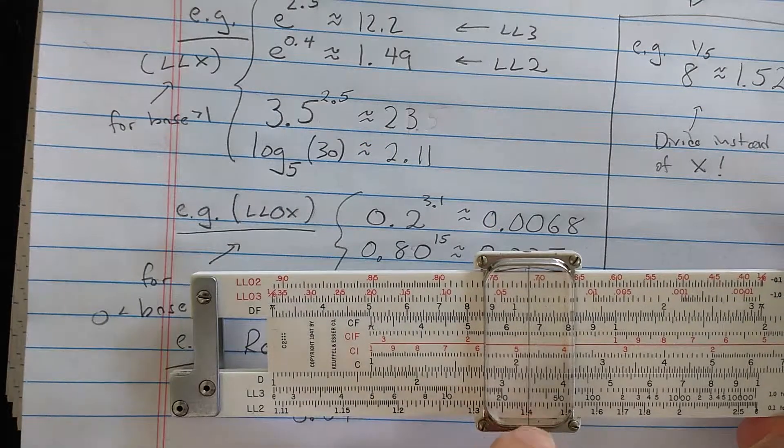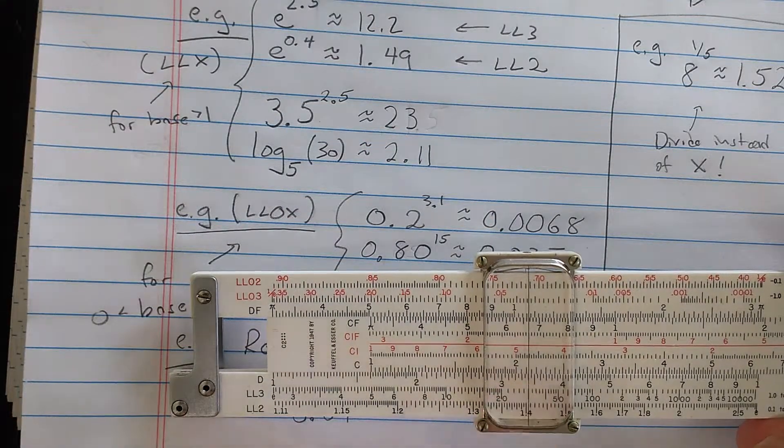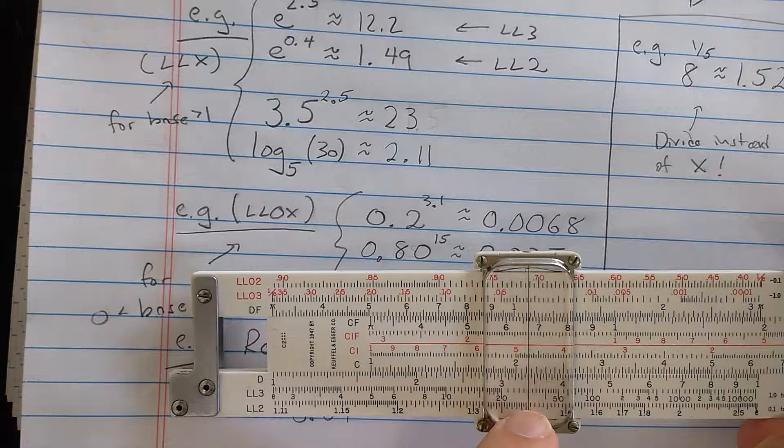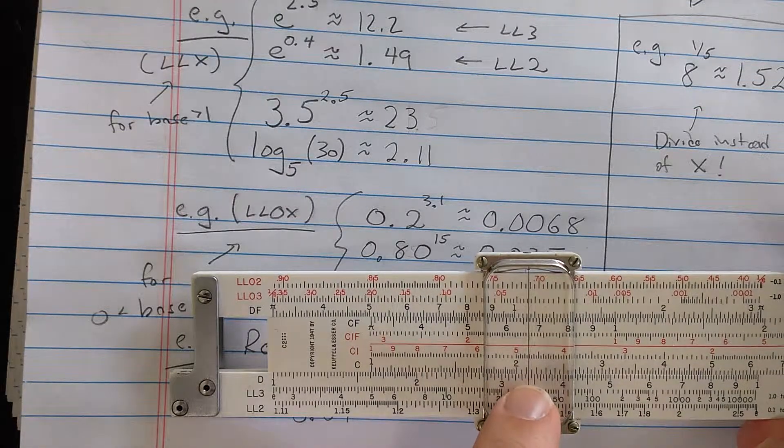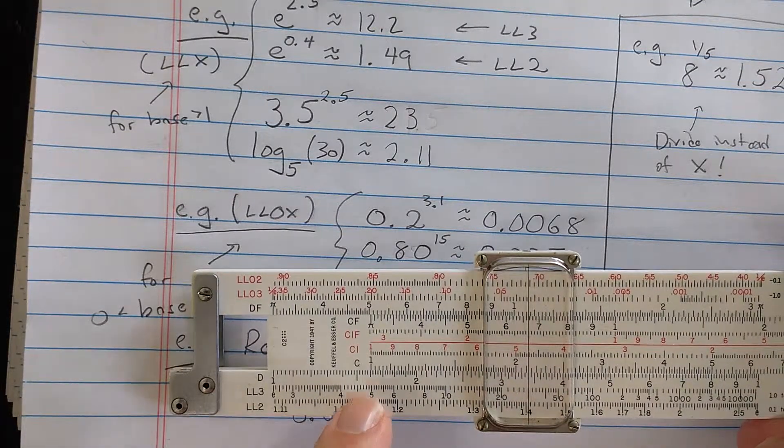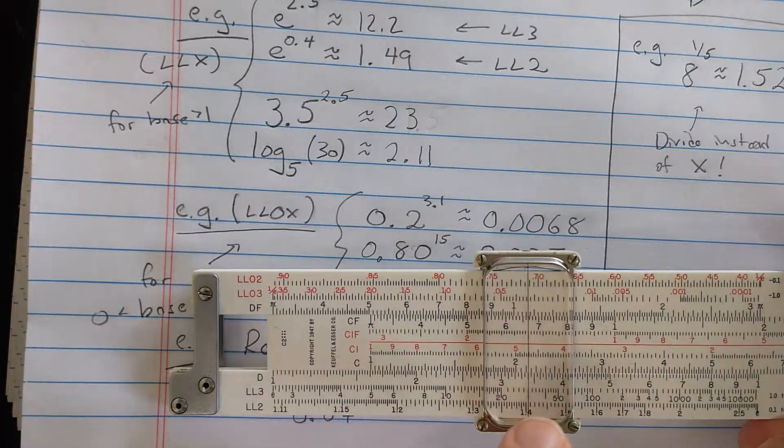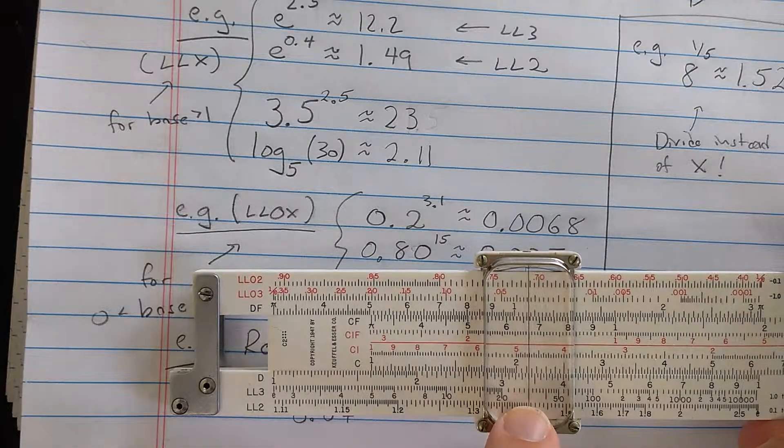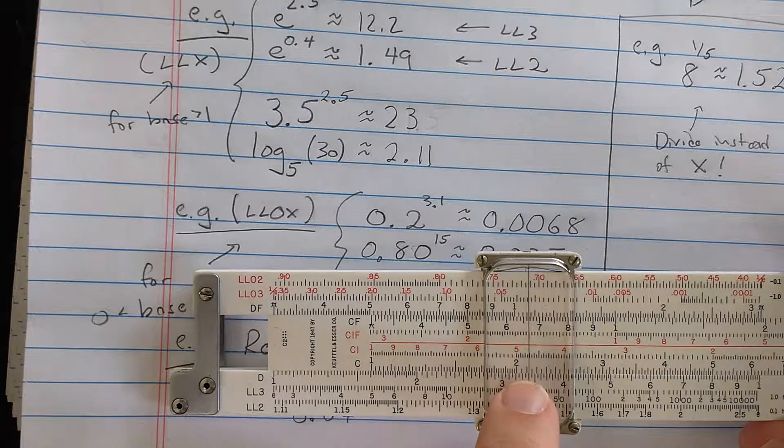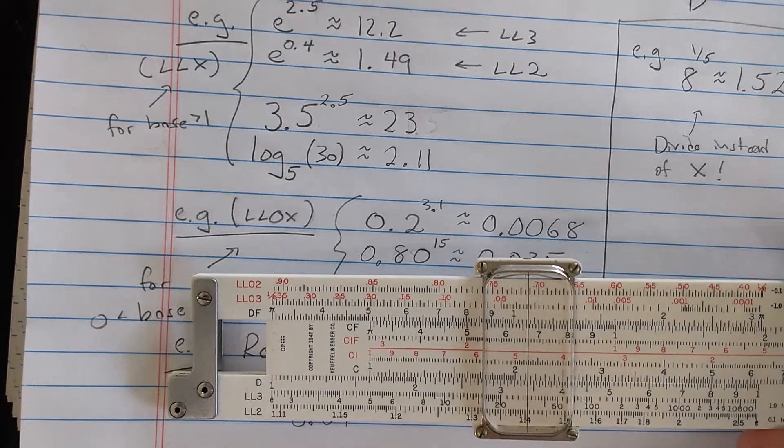So let's find 30 on the log-log 3 scale there. Well, looking at the C scale, it turns out the power I should put on 5 to get 30 is about 2.11. So you see, I found 5 here. Then I multiplied the log to something, until I got to 30 on the LL3 scale. And then I read that something was 2.11.